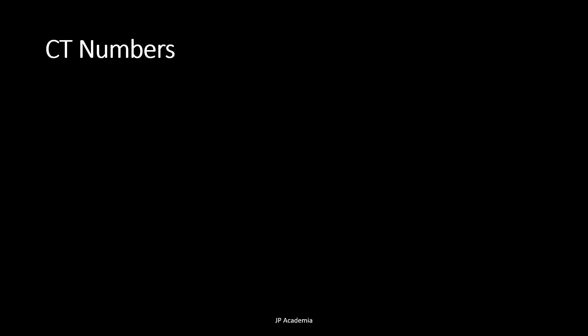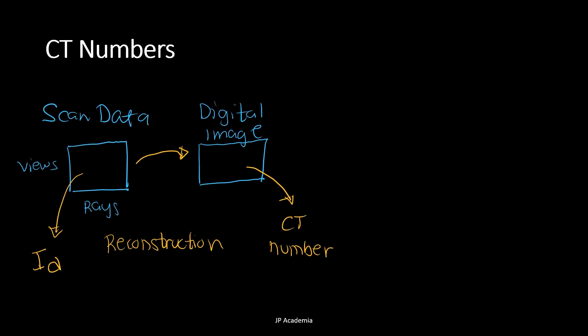Part of the CT reconstruction is a mathematical algorithm that converts the scanned data, we have the view and the rays here, into a numerical or digital image. This will generate an array of pixels, and each pixel has a numerical value called the CT number. Each value is specific to the density of tissue in the corresponding pixel or voxel. This generated digital image is then stored in the computer system of our CT machine.